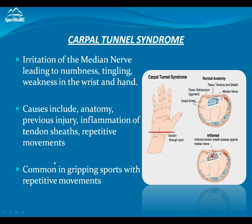Carpal tunnel syndrome is something we see often in the work world but can happen a lot in sport as well. This is the irritation of the median nerve that travels along the inside of our wrist, leading to numbness, tingling, and weakness in the wrist and hand. The most common causes are previous injury, repetitive motion, and inflammation of the tendon sheath. As you can see in the diagram, the tendons of our finger and wrist flexors and the median nerve all pass through quite a small tunnel — any inflammation can lead to irritation of that nerve. This can be really common in gripping sports with repetitive movements.